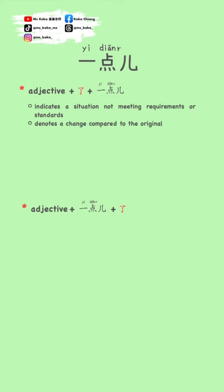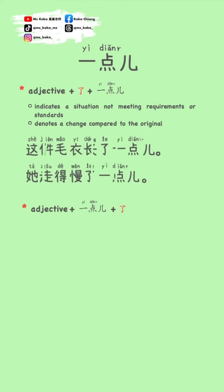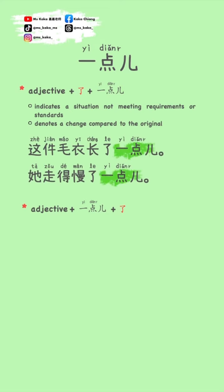When 了 is placed between the adjective and EDR, the comparison indicates a situation that doesn't meet requirements or standard. For example, 这件毛衣长了一点 — the sweater is a bit longer than expected or requested. It also denotes a change compared to the original.